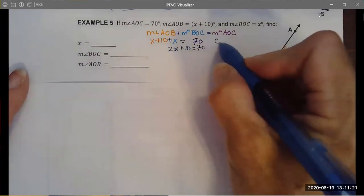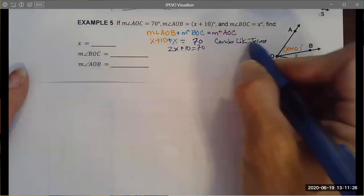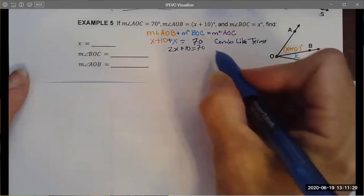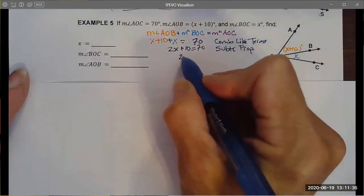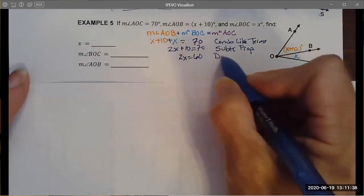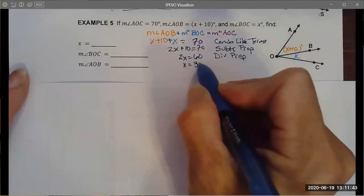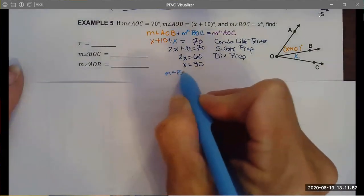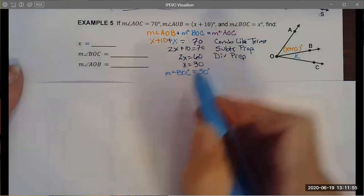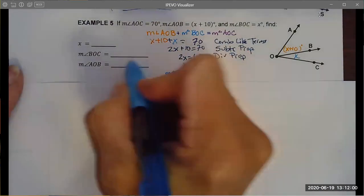From this I'm going to create an algebraic equation that I can solve. I add my two variables, combine like terms. The next thing I would do is subtract 10 from both sides using the subtraction property. I end up with 2x equals 60, and now I'm going to use the division property to isolate my variable and I end up with x equals 30. I'm not done in this particular case. I know that the measure of angle BOC is going to be 30 because the measure of BOC was x and x is 30.